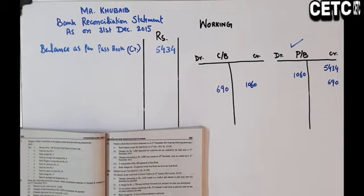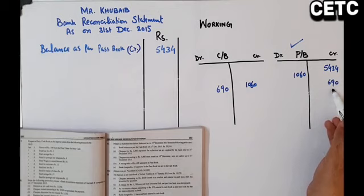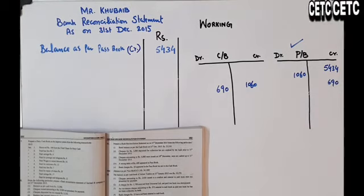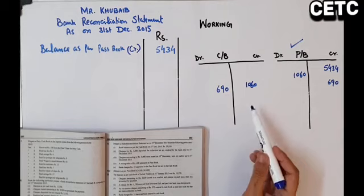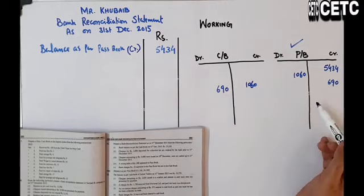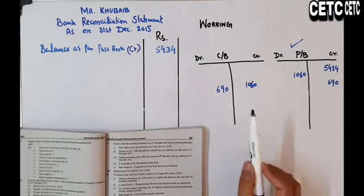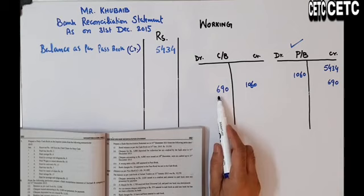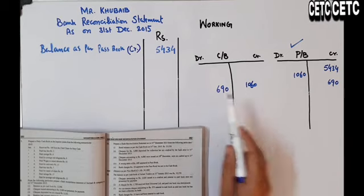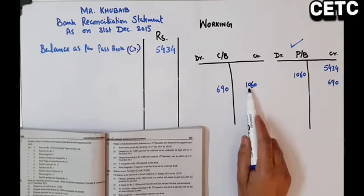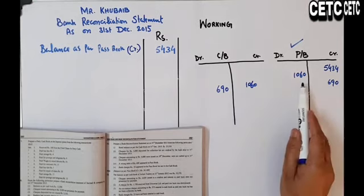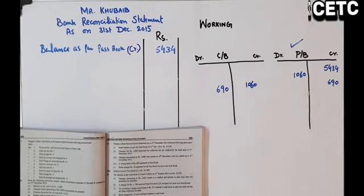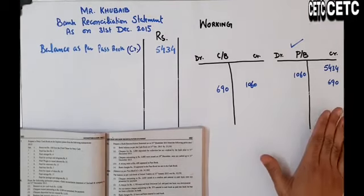Actually جو book میں ہوگی وہ تب ہی ہوگی جب اس کو آگے سے پیسے ملیں گے۔ آپ Passbook deal کر رہے ہیں تو جو کام دوسری party نے کیے ہیں آپ نے وہ کرنے ہیں۔ Customer نے جب check bank میں جمع کرائے تو اس نے debit کر لیا — آپ اس کو credit کر لیں گے۔ اس نے اپنی book میں bank column credit کر لیا — ادھر ہم اس کو debit کر لیں گے۔